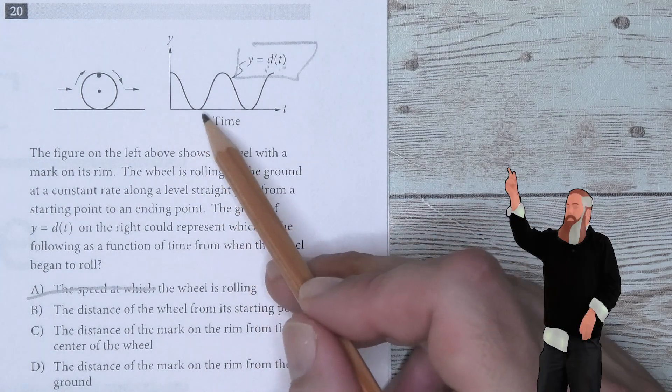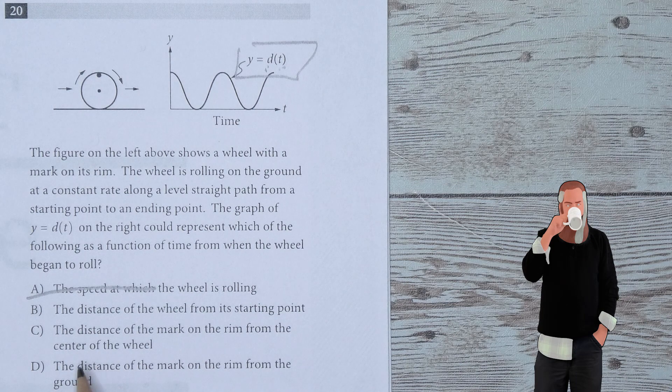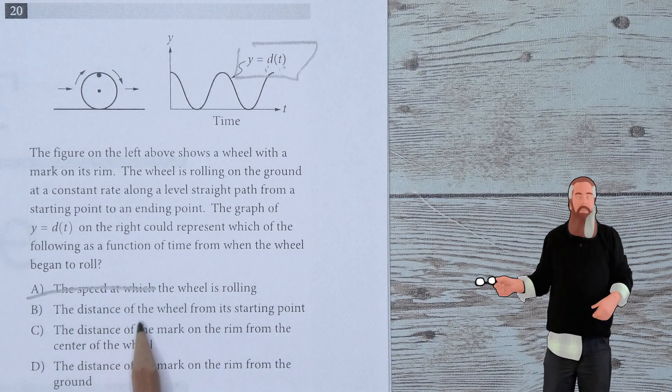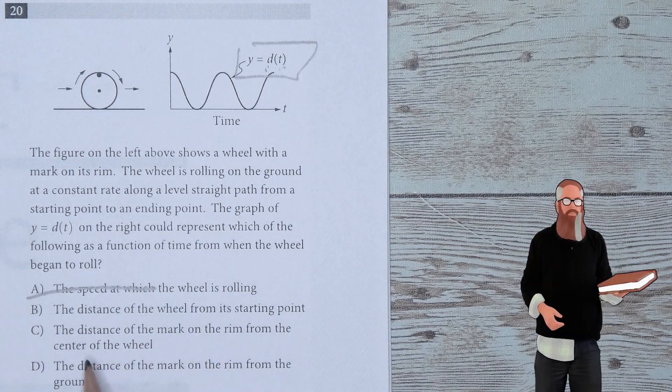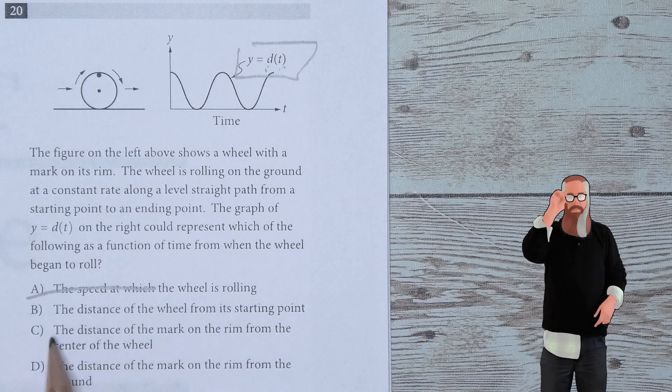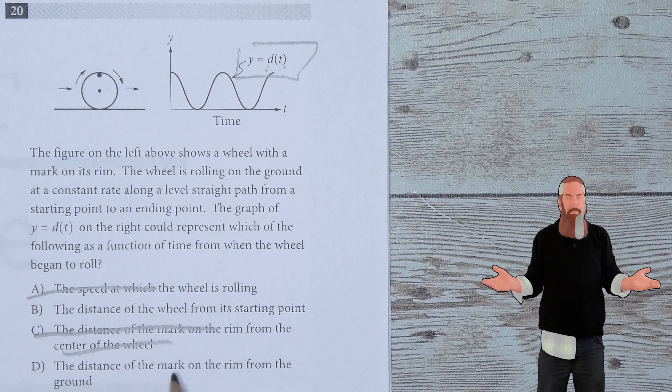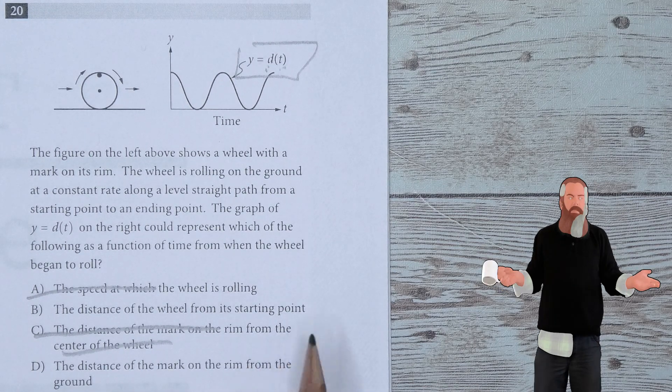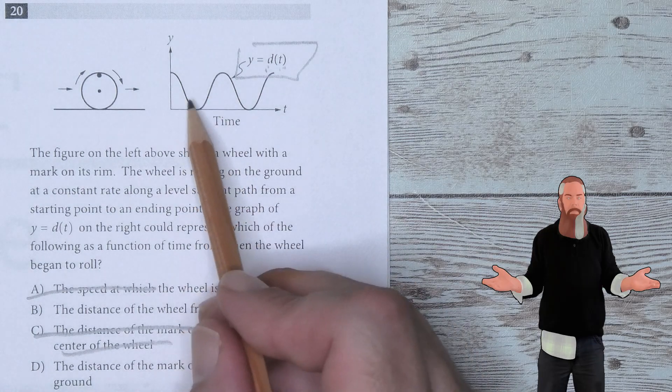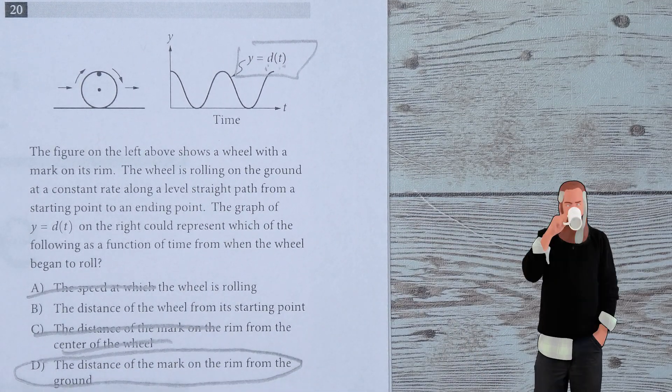This is a wave showing how that mark moves up and down as it's rolling. I think the distance of the wheel from the starting point would not be it. The distance of the mark on the rim from the center of the wheel would remain the same, so it's definitely out. The distance of the mark from the rim from the ground—I think that is a very good indication of what's going on with this graph. So D is the answer.